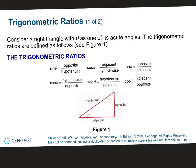We have reciprocal functions you need to know. You need to know that sine and cosecant are reciprocals of each other. Cosine and secant are reciprocals, and tangent and cotangent. Reciprocal means to flip.